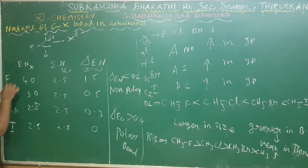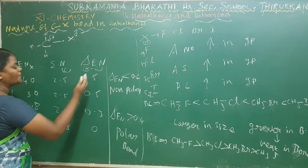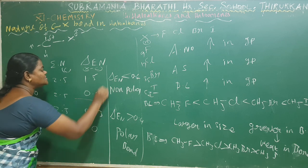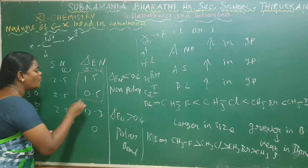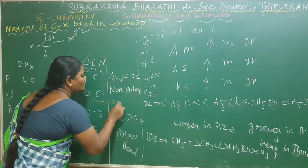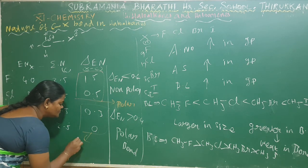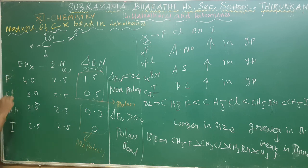So fluorine (difference = 1.5) and chlorine (difference = 0.5) form polar bonds with carbon, because their differences are greater than 0.4. Bromine (0.3) and iodine (0.0) form non-polar bonds, as their differences are less than 0.4. This is very important: C–F and C–Cl are polar bonds; C–Br and C–I are non-polar bonds.